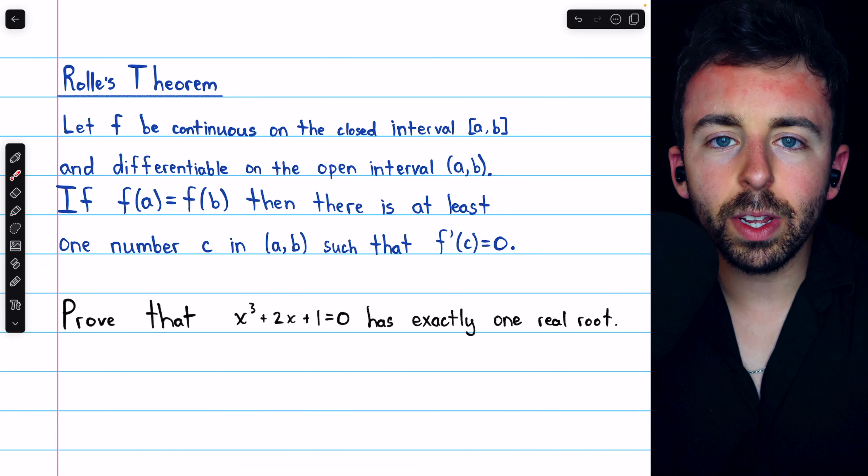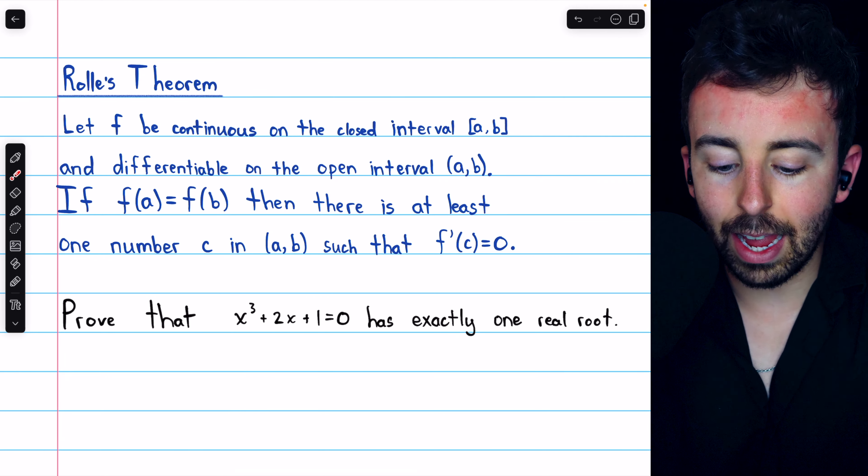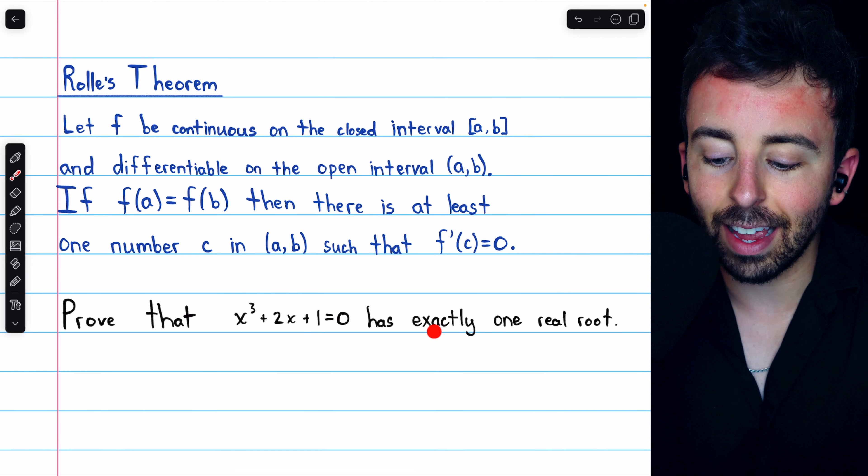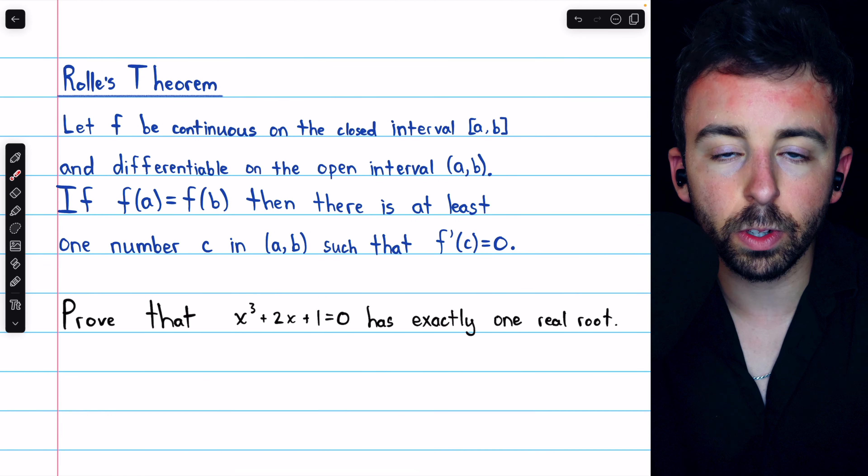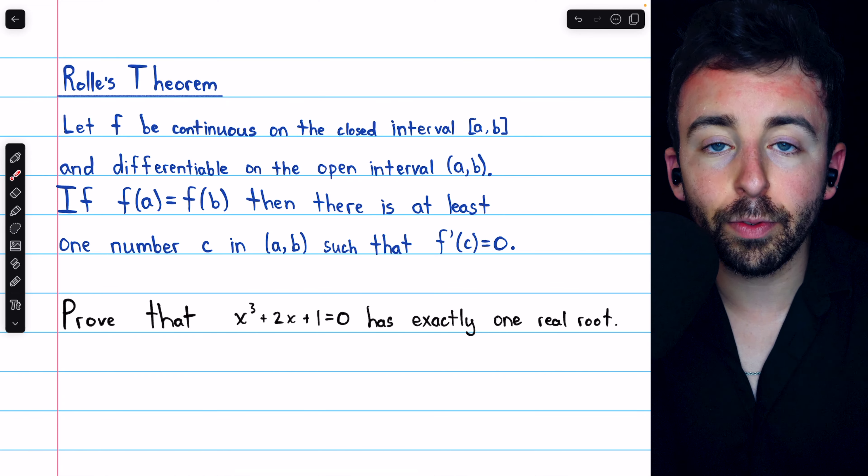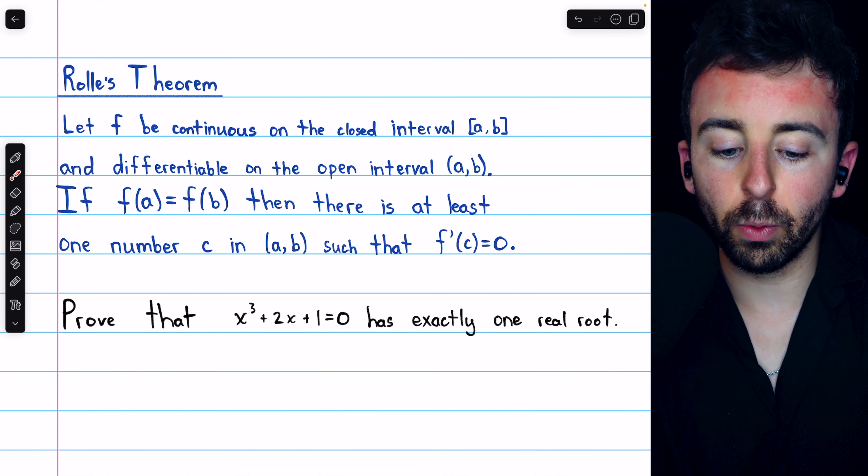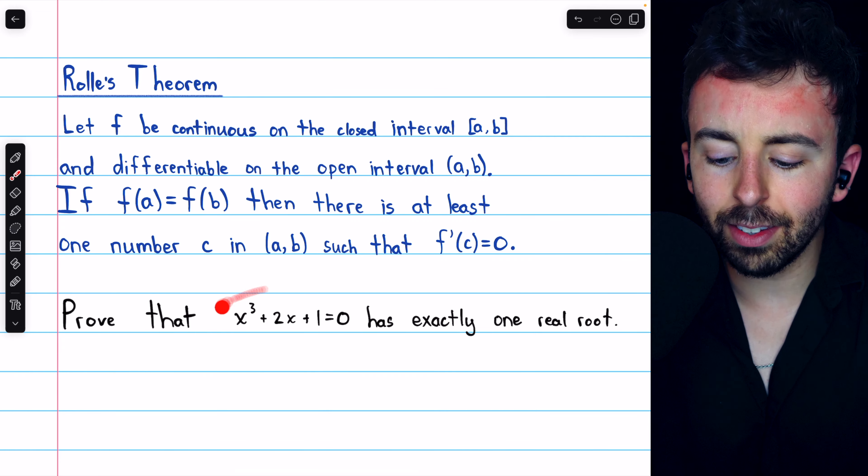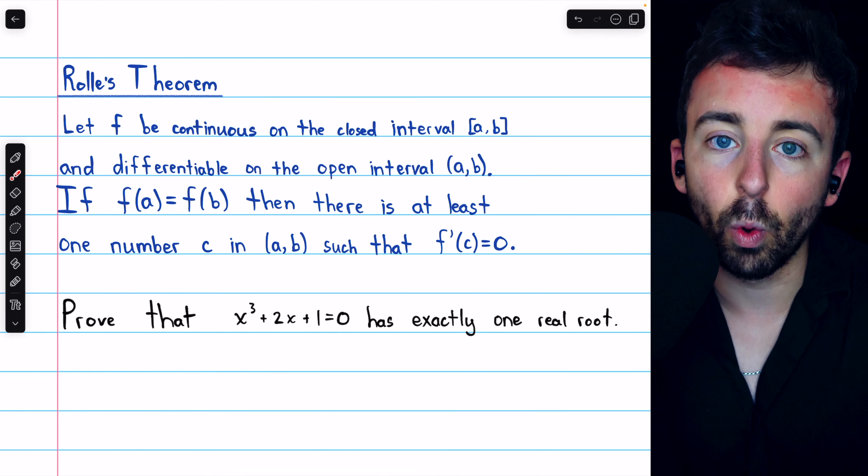One interesting thing we can do with this theorem is prove that a cubic equation has exactly one real root. Of course, some cubic equations have two or even three real roots, but with Rolle's theorem, we can prove that some of them have exactly one root.